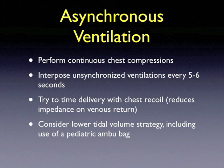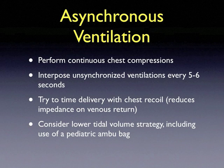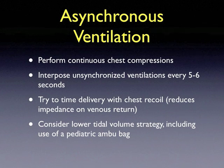During continuous chest compressions, try to interpose unsynchronized ventilations every five to six seconds as the compressor comes up off the chest, delivering a short tidal volume breath. Consider using a pediatric ambu bag with a 500 mL reservoir rather than the large adult ambu bag with a 1-liter reservoir, targeting approximately 5 mL per kilogram. In this approach, we abandon the ACLS protocol of 30 compressions to two ventilatory breaths in order to maximize compression fraction.